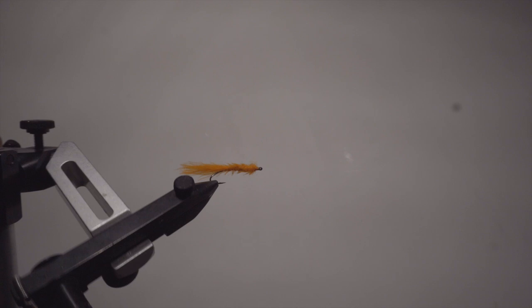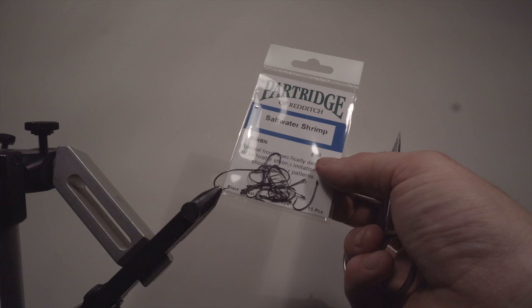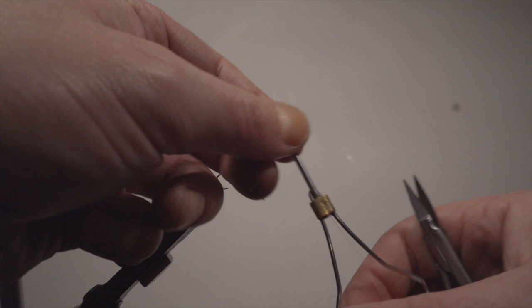We're going to set up for the woolly bugger. I forgot to say in the first fly, I'm using Partridge Saltwater Shrimp, the black nickel, size 6. Even though this is a size 8 bag, I'm using 8 or 6, most of the times size 6. I think that's a very good all-around size for streamers for coastal flies.